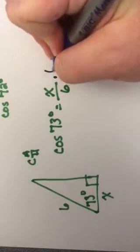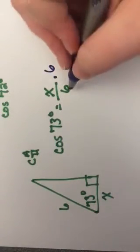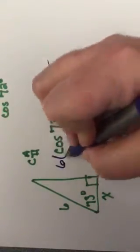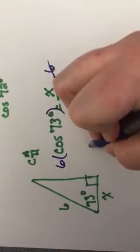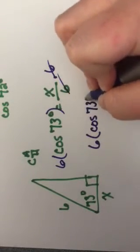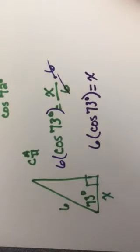Multiply by your denominator. Multiply by 6, so that eliminates that. And what you do to one side, you do to the other. Now in this case, we're left with 6 times the cosine of 73 degrees equals x. So this, we can just type right into our calculator since x is by itself.